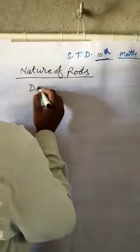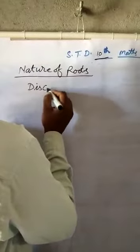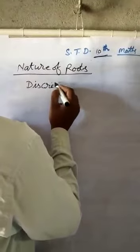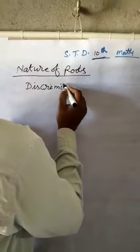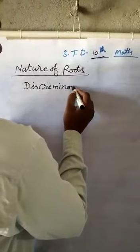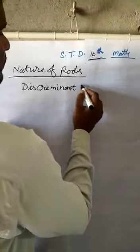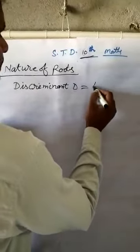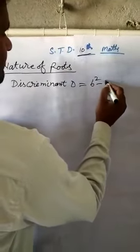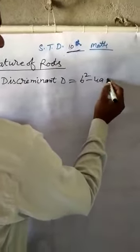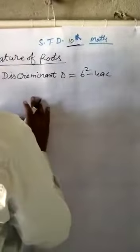Discriminant, denoted by D, equal to B square minus 4AC.